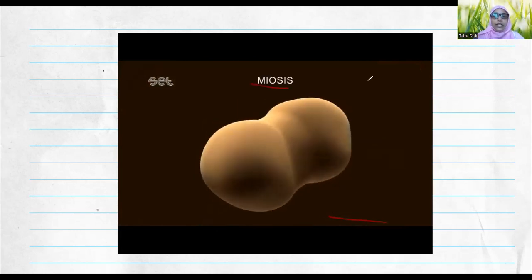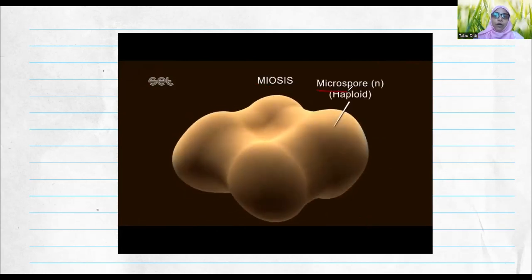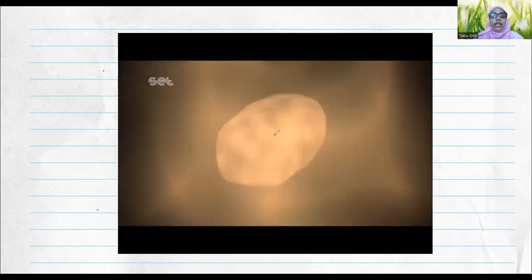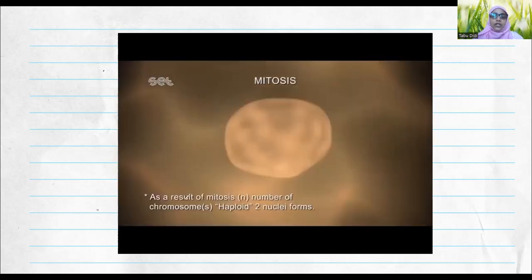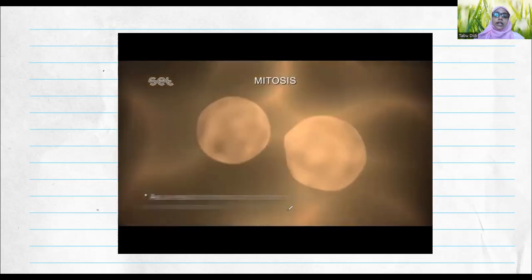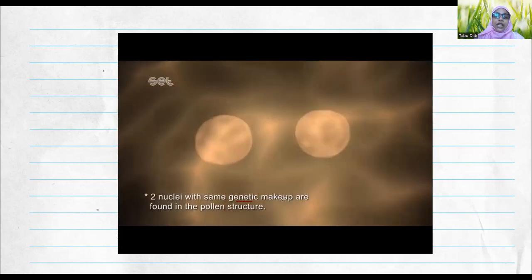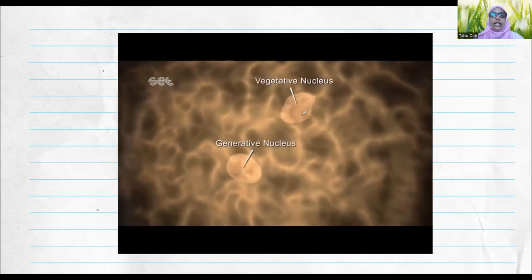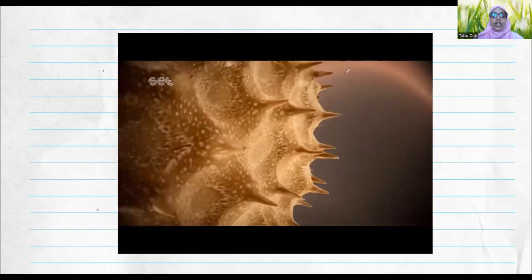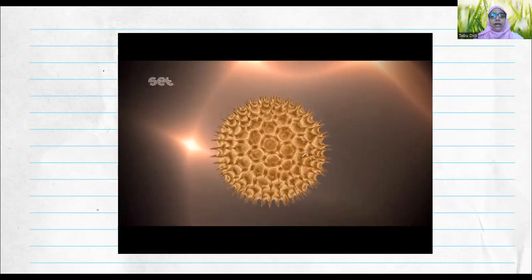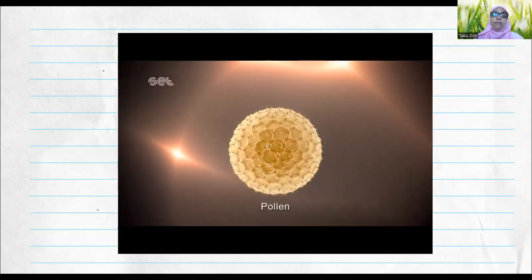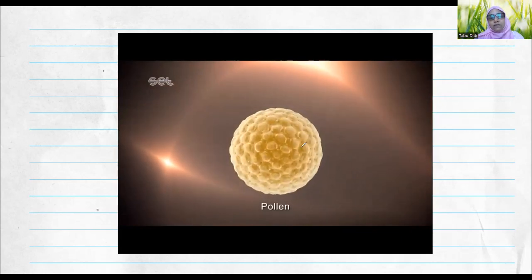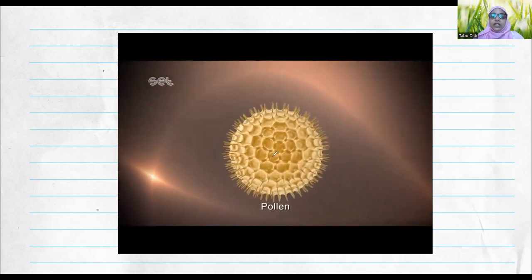The parent cell is always diploid; it will undergo meiosis and result in four haploid cells — four microspores. Each of these four microspores will further undergo mitotic division, so two haploid cells will be formed as a result of mitosis, with the same genetic makeup as the parent cell. This will further develop into the vegetative nucleus and the generative nucleus. Pollen grains come in different shapes and sizes — some might have spikes, some might not, different plant species have different types of pollen grains.